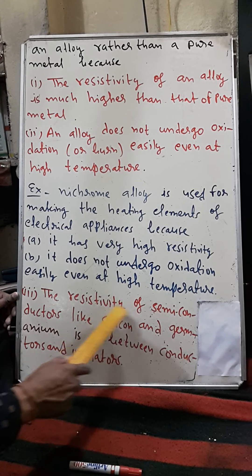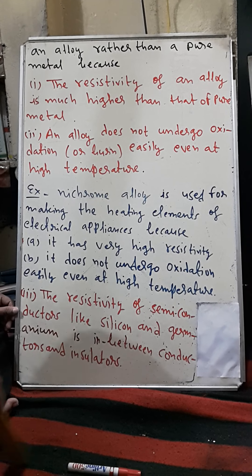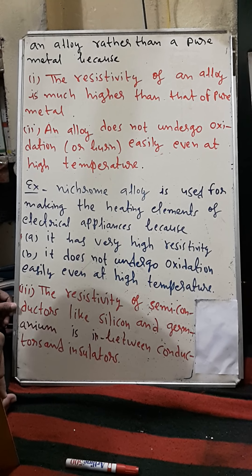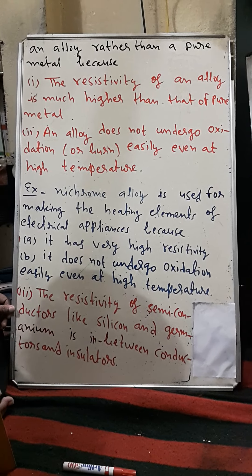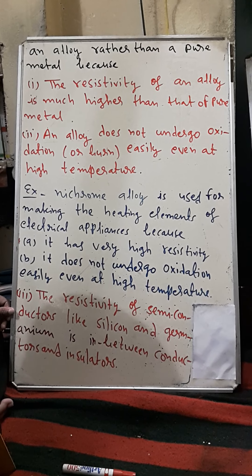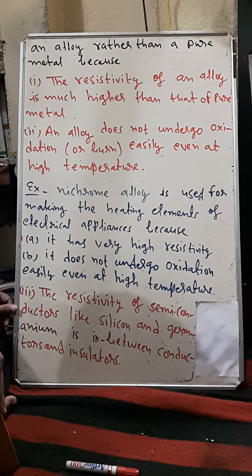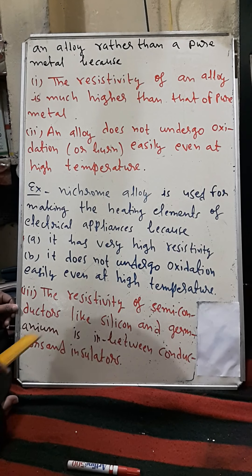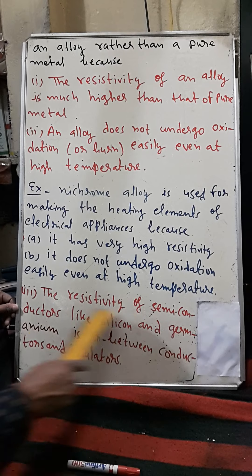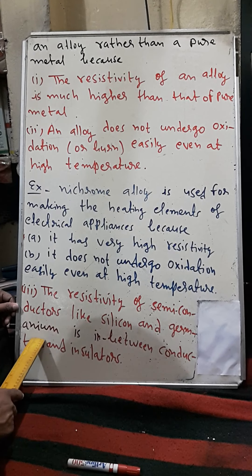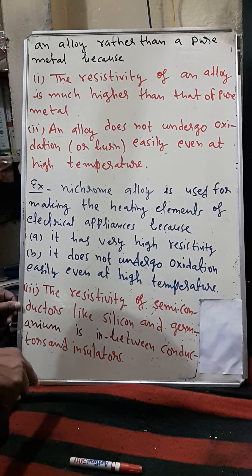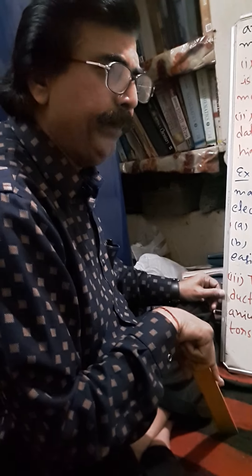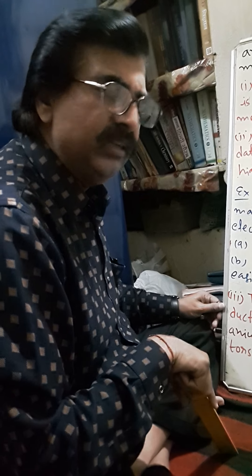Number three: the resistivity of semiconductors. Semiconductors, as I mentioned, are materials that sometimes behave like conductors and sometimes like insulators — such as germanium and silicon. The resistivity of semiconductors like silicon and germanium is in between that of conductors and insulators. Thank you — my next topic will be numerical problems on resistivity.